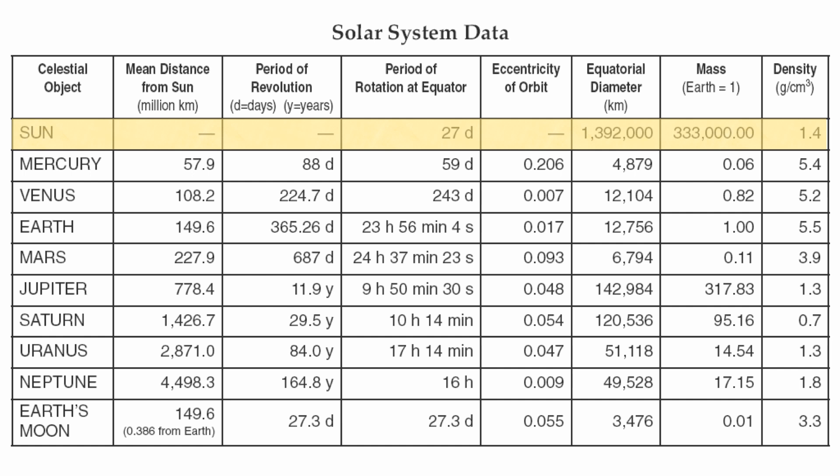You can also find a little information on our sun on the bottom of page 15, the solar system data chart. And you'll see that you can find information about the period of rotation, the equatorial diameter, the mass, and the density of the sun. So, that's it for now. Make sure you check back soon. We'll talk to you.